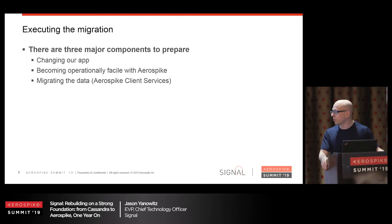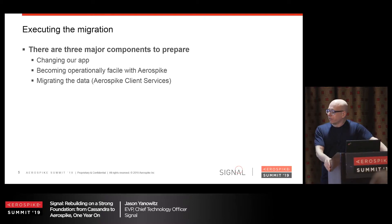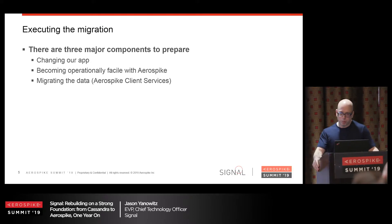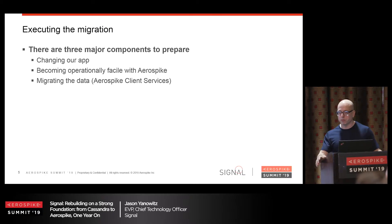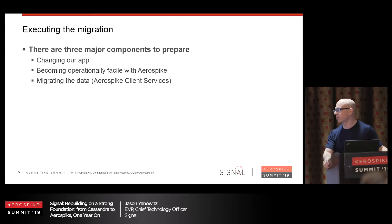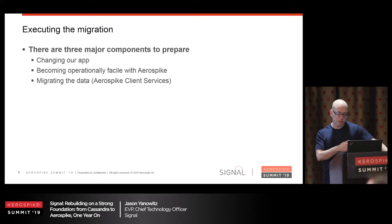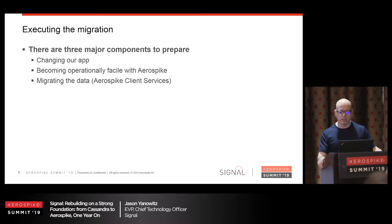The third component was, for us, the hardest or scariest piece. About halfway through the planning discussions with Aerospike, we said: we've never migrated Cassandra to Aerospike, we don't want to become domain experts in doing that, we're pretty sure you know how to do it — can we just pay you to own that piece of the problem? They said yes, which absolutely helped the project succeed. So between January and March, these three paths went in parallel, and by the end of March, we were ready to do the migration.